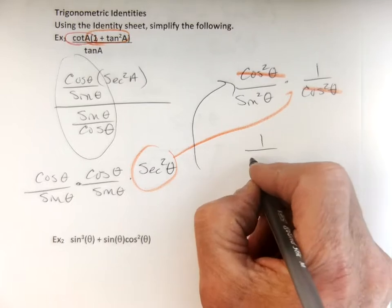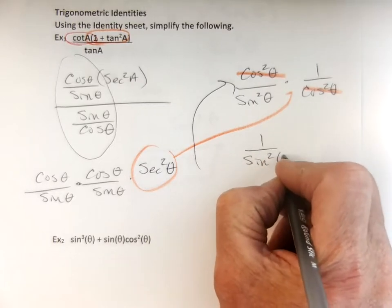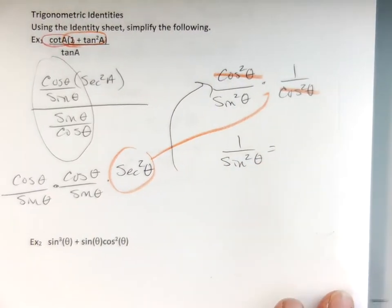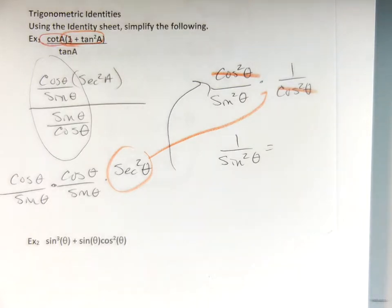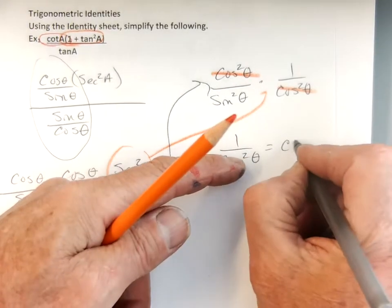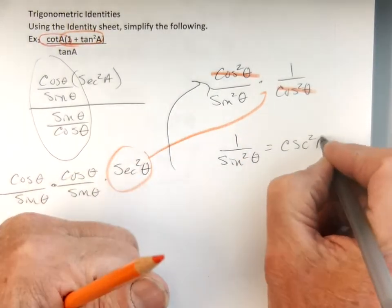And then I'm left with a one over a sine squared theta, and there's a better way to write that, right? There's a better answer than one over sine squared, what do you think that would be? So Kai, you're talking about the reciprocals, weren't you? So one over sine would be cosecant, but it says squared, so it's just going to be cosecant squared of.